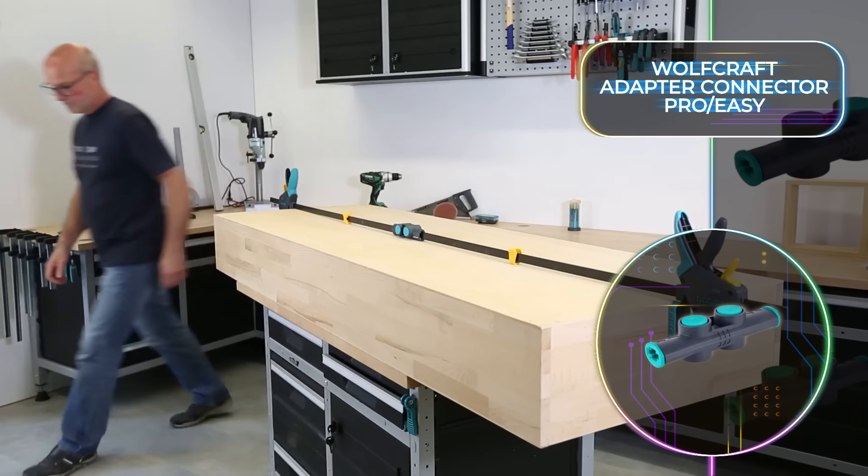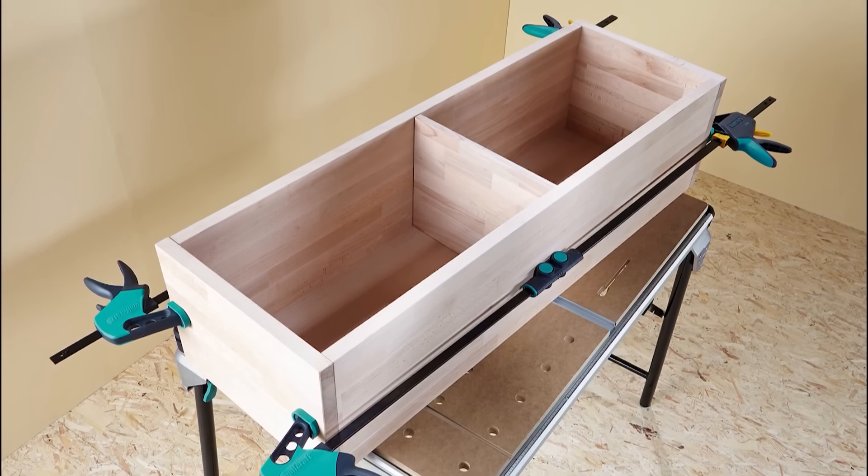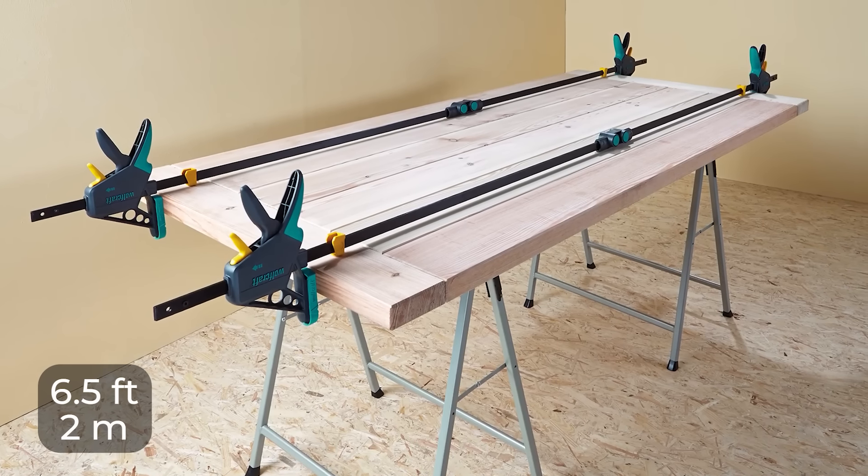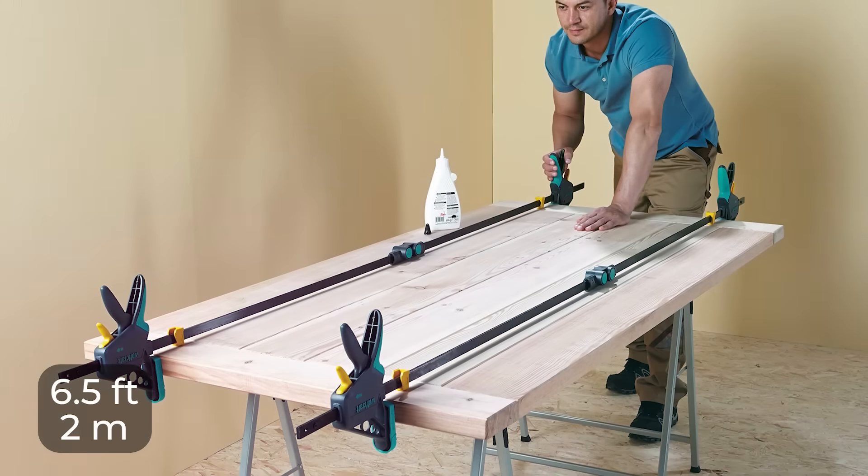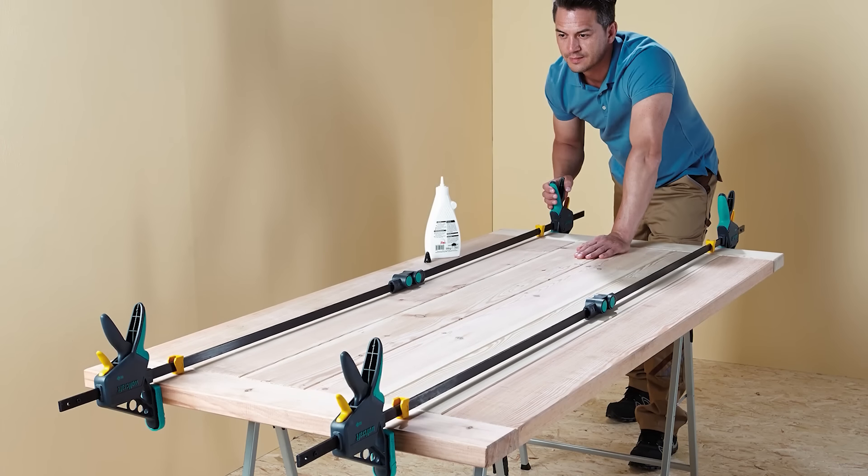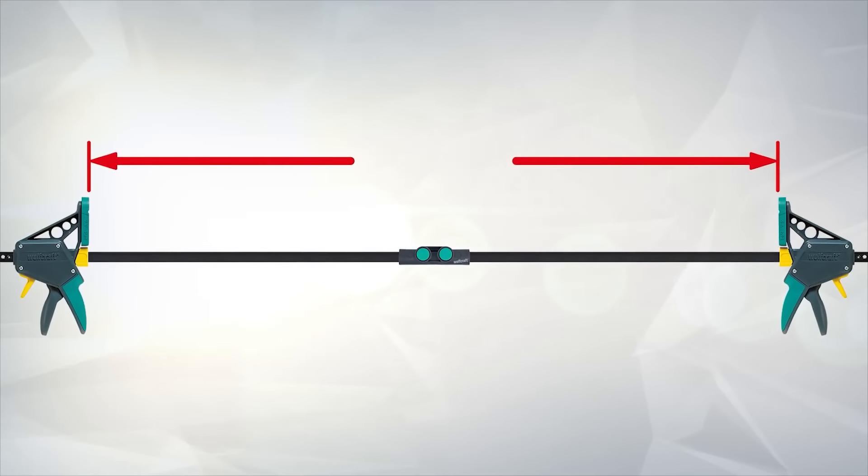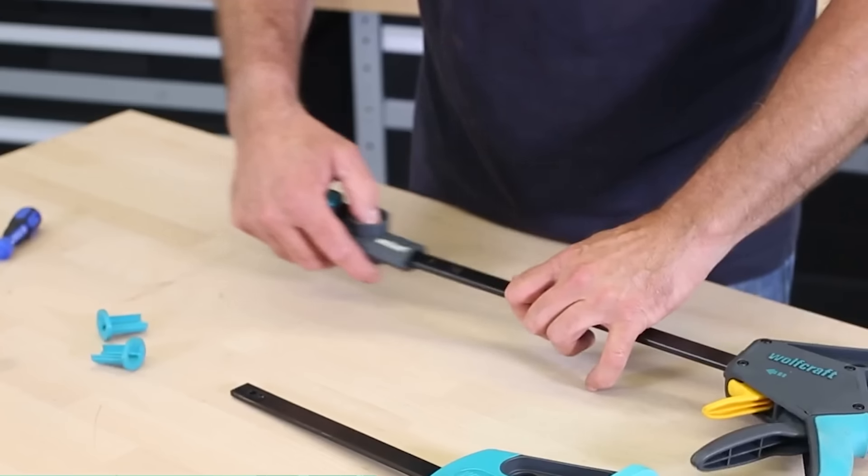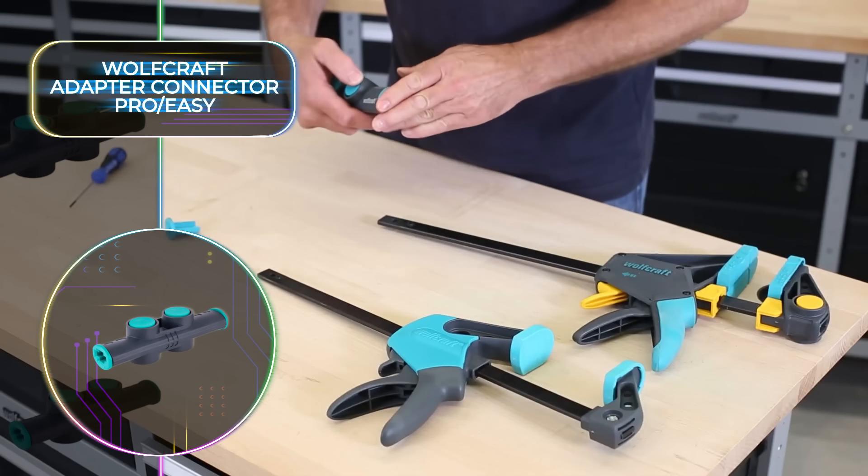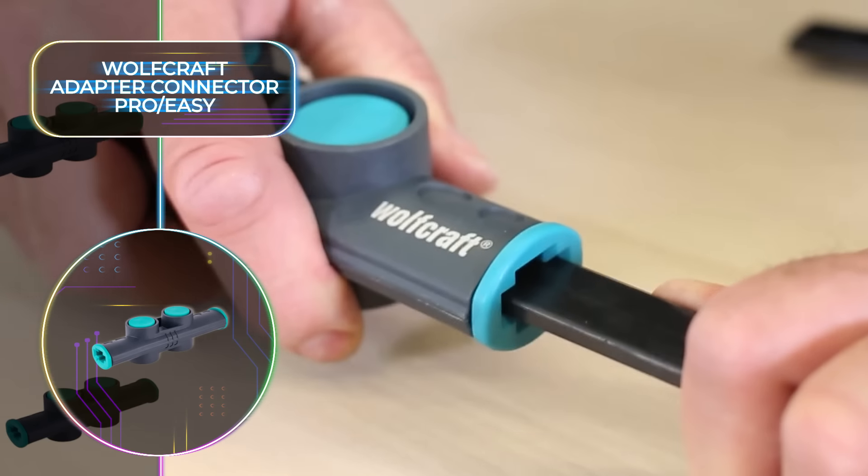It's been specifically made to work with the Wolfcraft Easy H Pro and Easy series. With it you can effortlessly join the ends of your clamps, transforming them into a single continuous clamp that extends up to 6.5 feet or 2 meters in length. This new-age tool offers unparalleled convenience and versatility for assembling large components or gluing furniture, and unlocking the clamp is as simple as pressing a button.